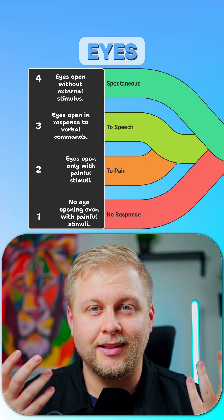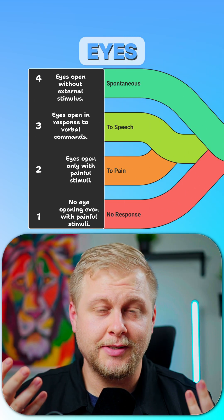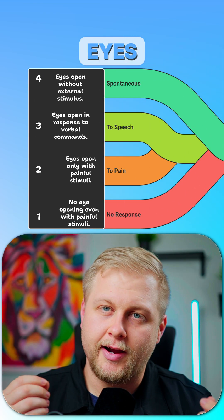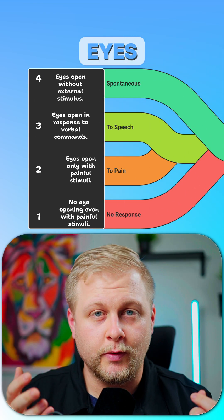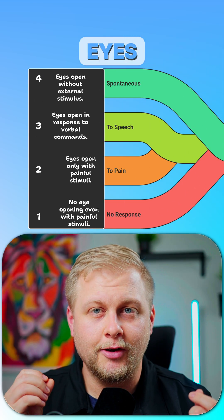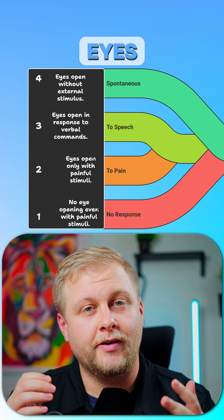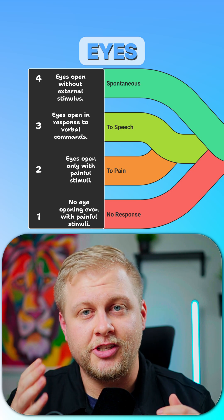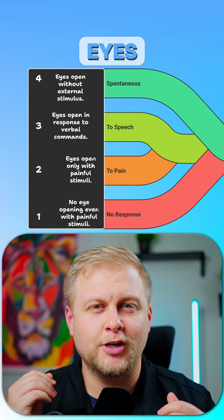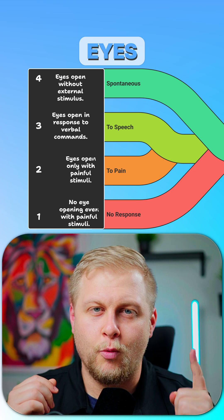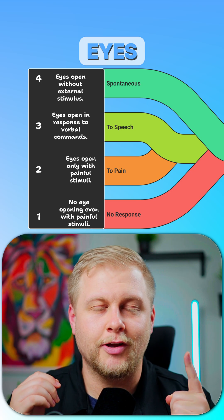The eye opening score assesses the patient's arousal or wakefulness. A four out of four means they look at you without prompting. A three out of four is when you use voice to prompt them to look. Two out of four is when you have to shake or touch them to open their eyes, and a one out of four is when their eyes don't respond at all.